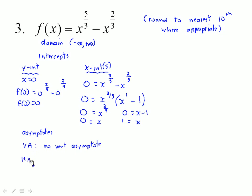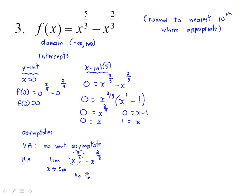As far as a horizontal asymptote goes, if we take the limit as x increases or decreases without bound, we only need to pay attention to the leading term. Taking the cube root of x and then raising it to the fifth — as x gets bigger and bigger, the y value correspondingly increases. The same is true as x decreases; it will still be negative and go on forever. So there is no limit and therefore no horizontal asymptote.